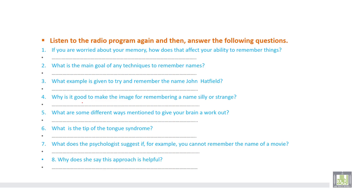Okay, if you are worried about your memory, how does that affect your ability to remember things? According to the audio track, worrying about your memory makes it more difficult to remember things. So, the more you are worried, the more difficult it makes to remember things. This is according to the audio track.